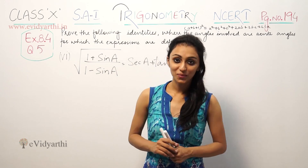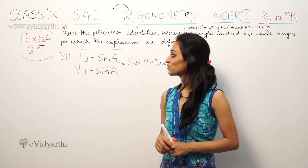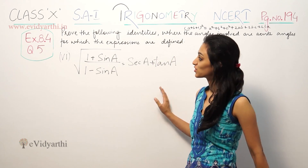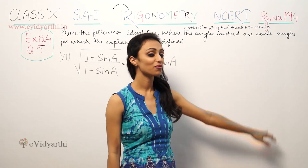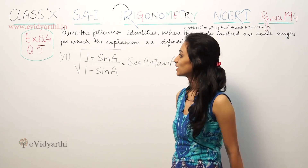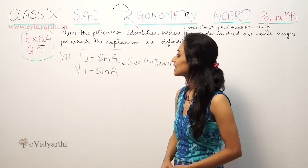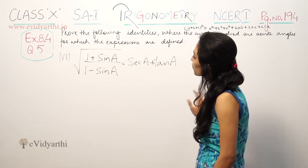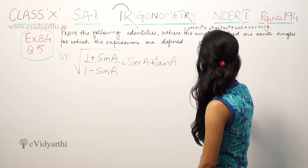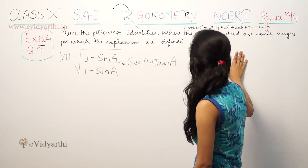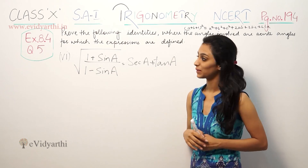Hi, this is Krishu with another question of trigonometry. This is question number 5, page number 194, exercise 8.4, question number 5, 6th part. It says: prove the following identities where the angles involved are acute angles or the expressions are defined.